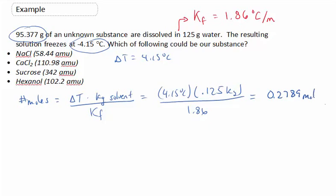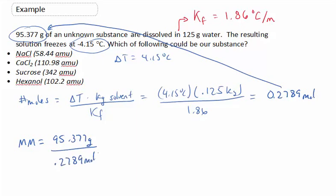Now, we know the number of moles. We also know the number of grams that gave us that number of moles. So the molecular mass is pretty straightforward. It's 95.377 grams of this substance. And that substance also contains 0.2789 moles. If I do this math, this calculation gives us 341.9 amu's or grams per mole.